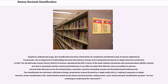Despite its widespread usage, the classification has been criticized for its complexity and limited scope of scheme adjustment. In particular, the arrangement of subheadings has been described as archaic and as being biased towards an Anglo-American worldview. In 2007–08, the Maricopa County Library District in Arizona abandoned the DDC in favor of the Book Industry Standards and Communications, BISAC, system, one that is commonly used by commercial bookstores, in an effort to make their libraries more accessible for patrons. Several other libraries across the United States and other countries, including Canada and the Netherlands, followed suit. The classification has also been criticized as being a proprietary system licensed by a single entity, OCLC, making it expensive to adopt. However, book classification critic Justin Newland stands by the Dewey Decimal System, stating newer, more advanced book classification systems are too confusing to understand for newcomers.